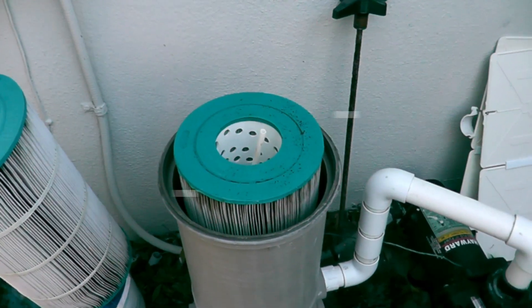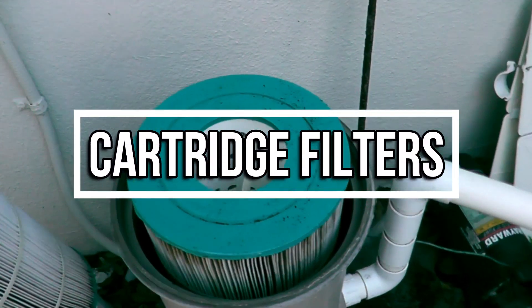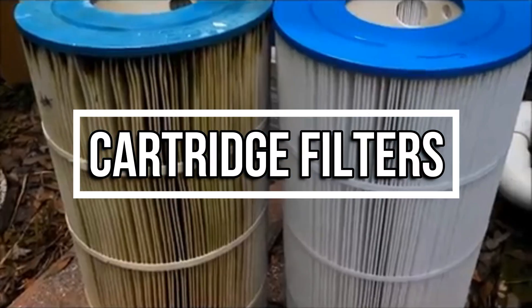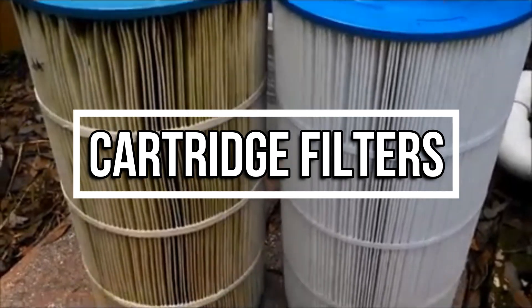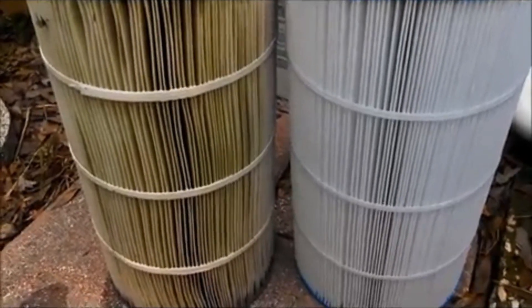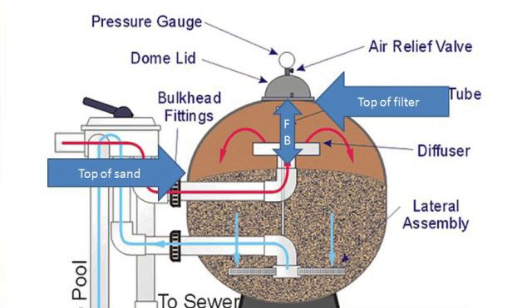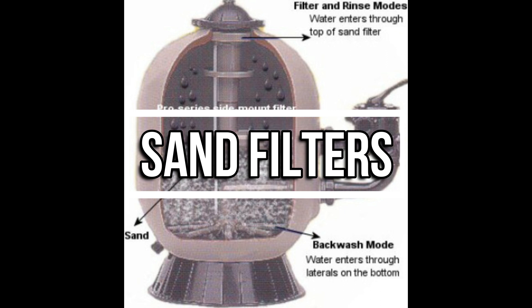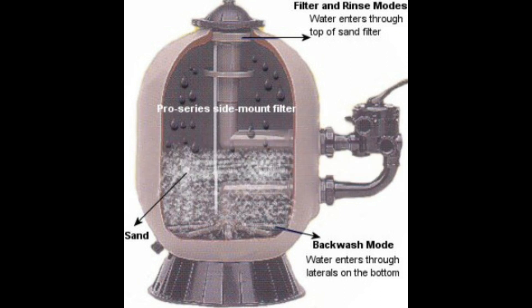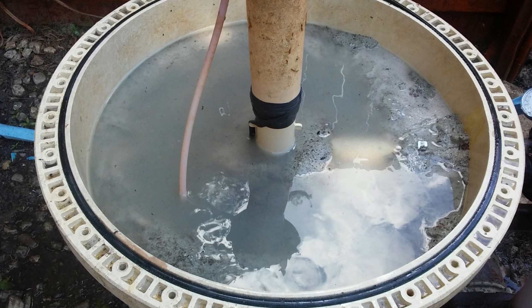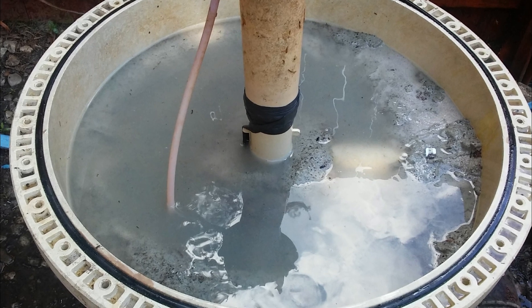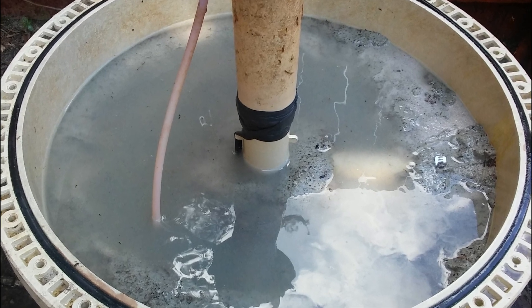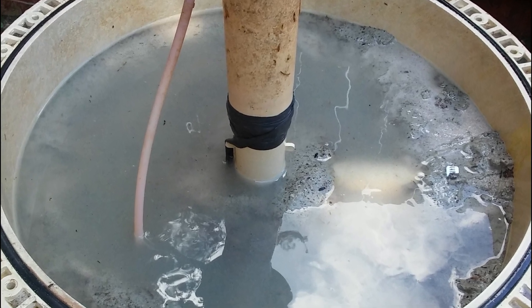The same goes for cartridge filters. If the cartridge has any rips or tears, toss it away and replace it with a new one. For sand filters, you'll want to inspect the sand every five to seven years and top it off if needed. If it's hardened or if the sand isn't filtering the way it should, it might be time to change it.